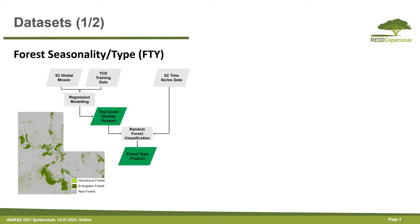In the framework of the Red Copernicus project, we have been producing different datasets on study sites across the tropics. One of these products is the forest seasonality type, produced based on the tree cover density product. This product is derived from regression modeling of Sentinel global mosaics and training data, combined with a time series of Sentinel-2 imagery and random forest classification. The output is a thematic map for deciduous forests, evergreen forests, and non-forests.